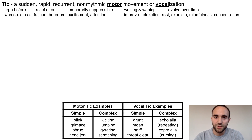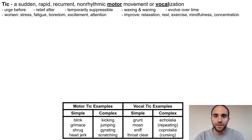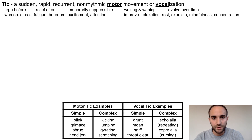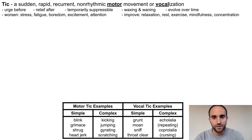Examples of simple vocal ticks include grunts, moans, sniffs, or throat clearing, while complex vocal ticks include echolalia, which involves repeating words, and coprolalia, which involves cursing or using other obscene words.